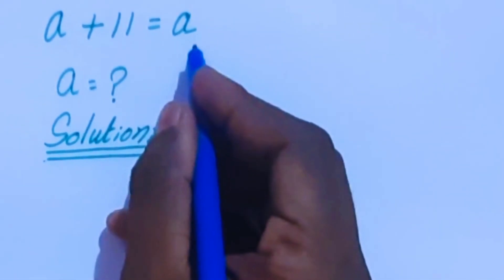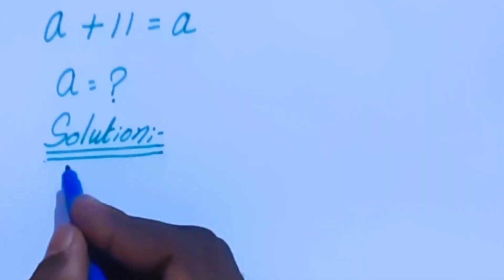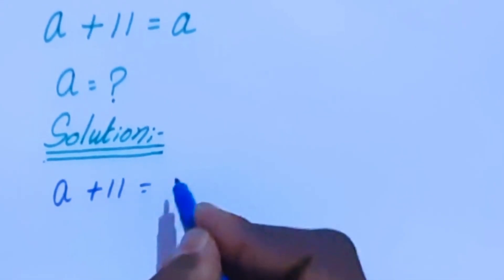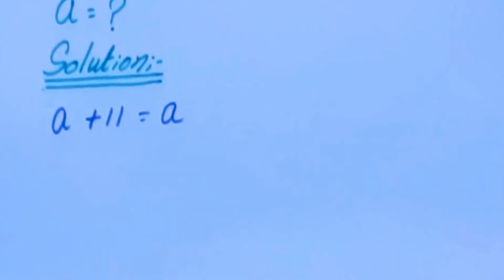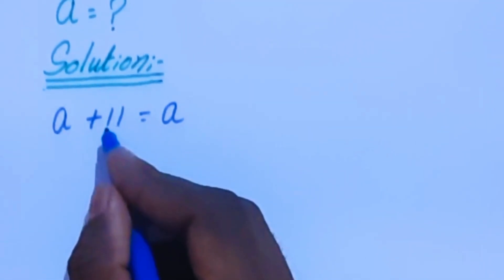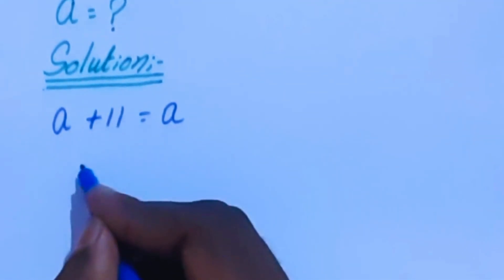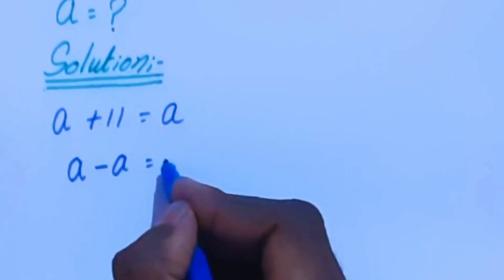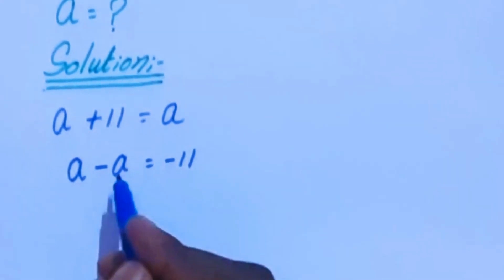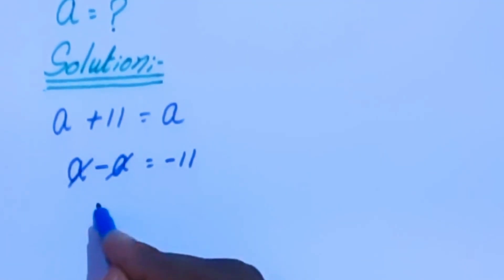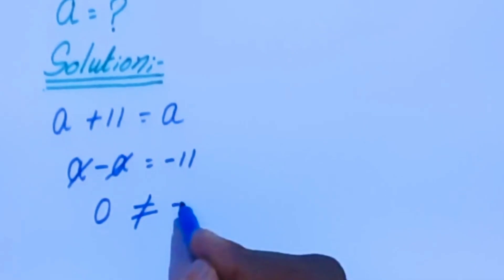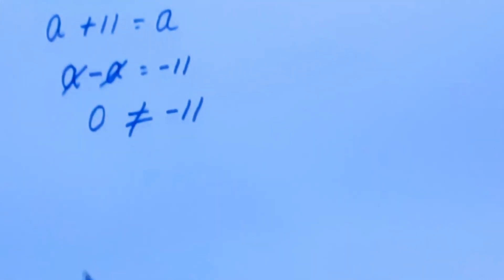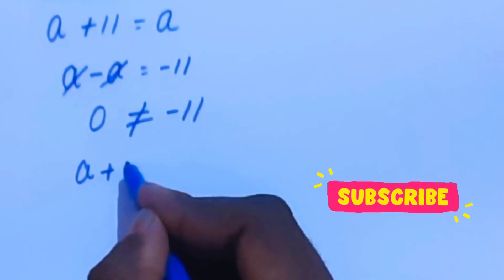Hello viewers, welcome to the channel. Today we are going to solve this problem: find a value where √(a + 11) = a. Moving 11 to the right-hand side and a to the left-hand side gives a minus a equal to minus 11, so 0 is not equal to -11. So this is not a solution by direct linear method.